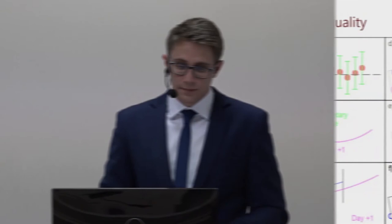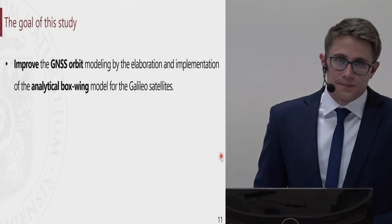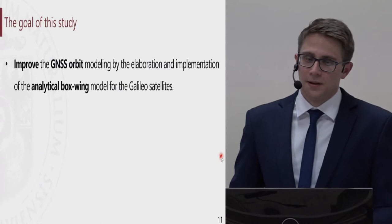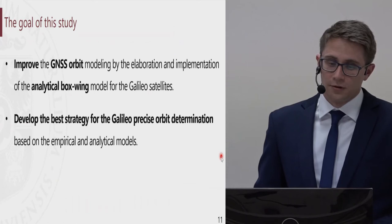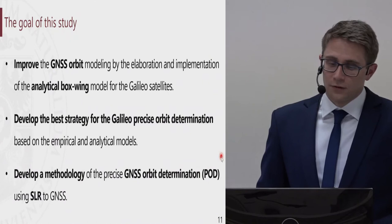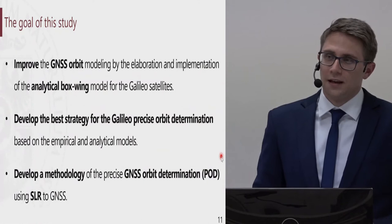Knowing the methodology of orbit determination and the methods of quality evaluation, we can move to the goals of this study. These are: first, to improve GNSS orbit modeling by elaborating and implementing an analytical boxwing model for the Galileo satellite; secondly, to develop the best strategy for Galileo precise orbit determination based on empirical and analytical models; and finally, to develop a methodology for precise GNSS orbit determination using solely SLR data to GNSS satellites.